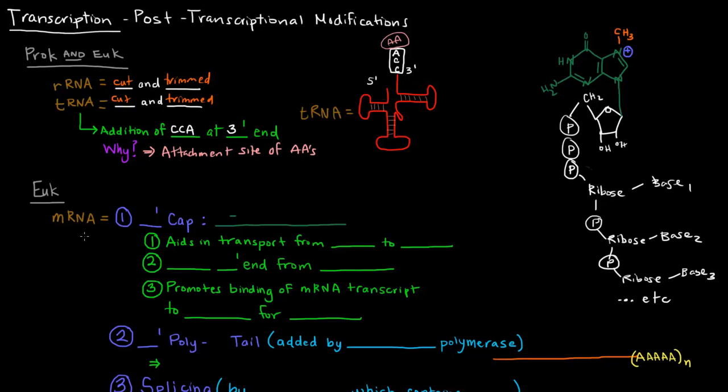Now, eukaryotes have their mRNA modified. Prokaryotes don't. So I'm going to talk about the eukaryotic mRNA modifications. The first one is the 5' cap, and the 5' cap is a 7-methylguanosine cap. And it's attached via a 5' to 5' triphosphate linkage.